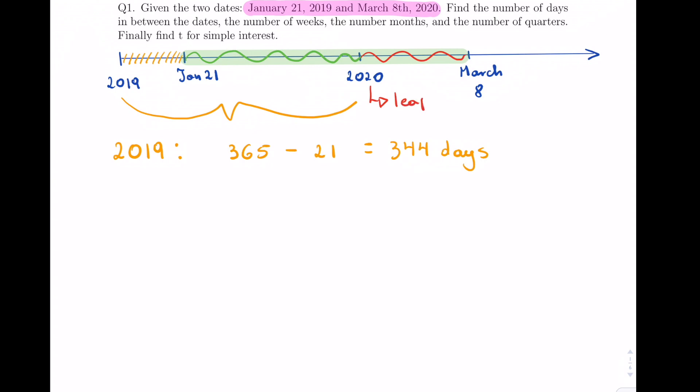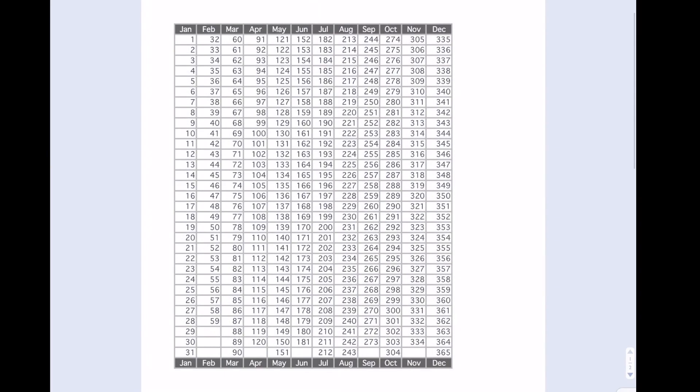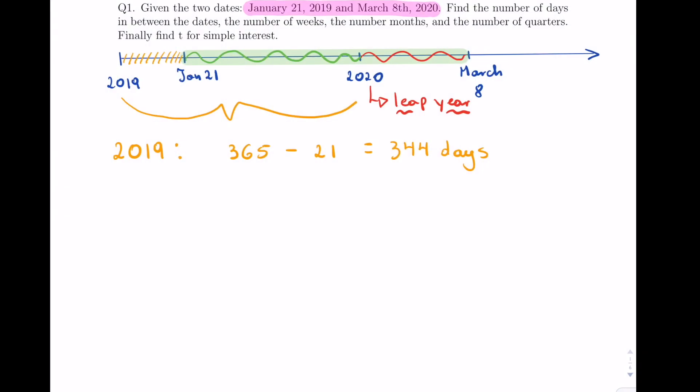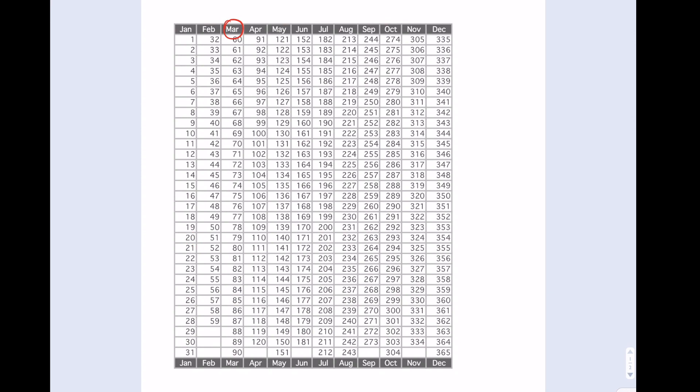You can test it by simply dividing by four, and you'll find that four goes evenly into 2020. What day is March 8th? We can go to our calendar here. March 8th, but it is a leap year, so it's not 67, it's going to be 68 because we're going to have to add the one.